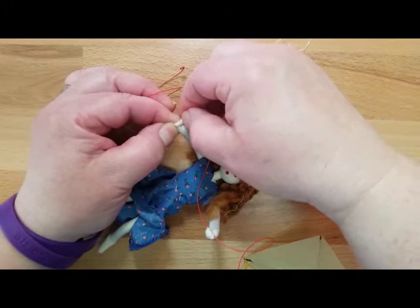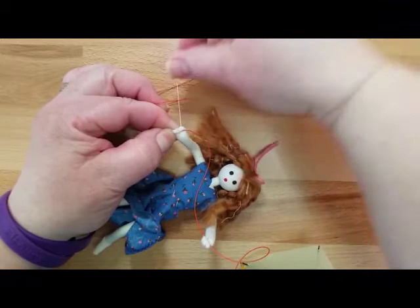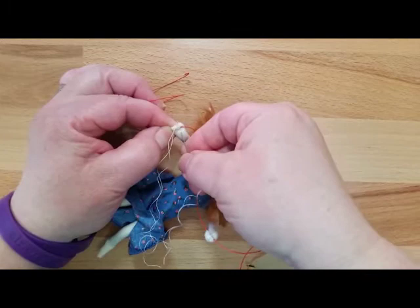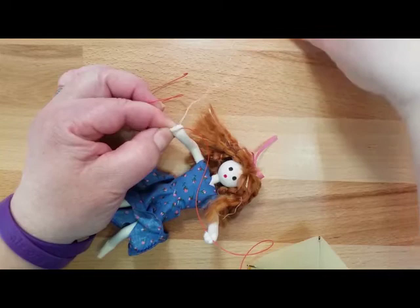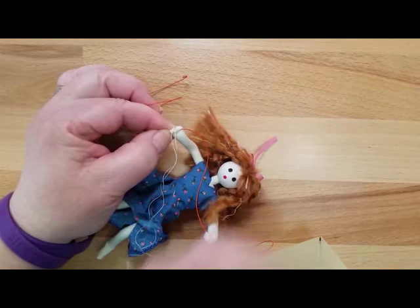Have it pointing the direction you want, have the kite going where you want it to go, how close do you want it to be to the girl and so forth. So again, carefully around, pull it tight, do that about four times.